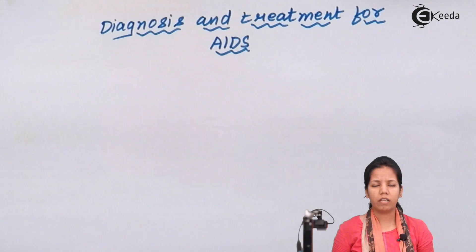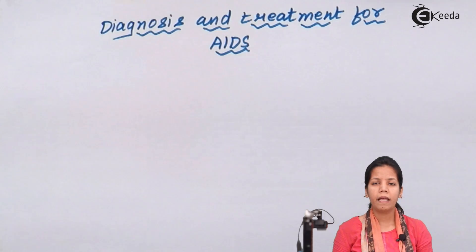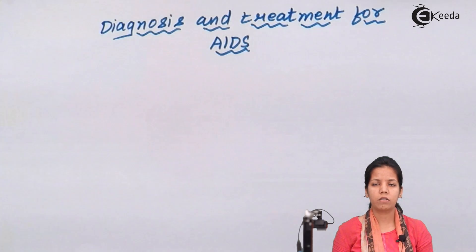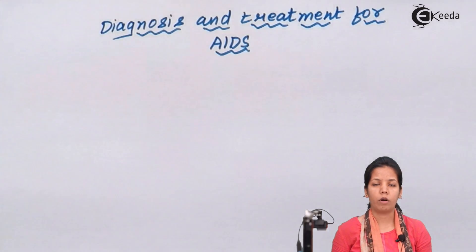There are two types of tests available for HIV. The normal test is the CBC, which all of us do. The other kind of test available is ELISA, which is a preliminary test, and another one is the Western Blot, which is the confirmatory test.